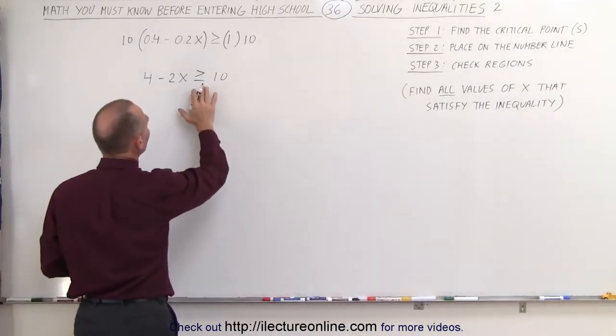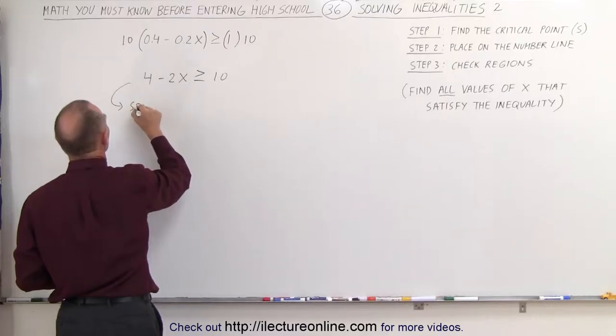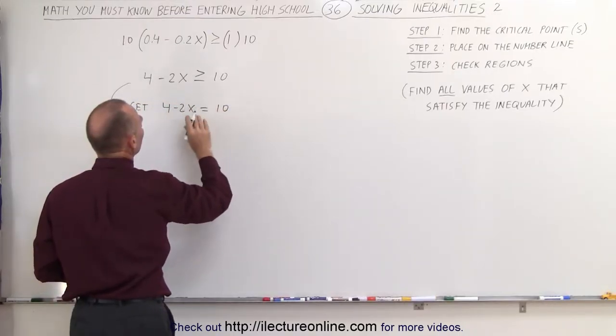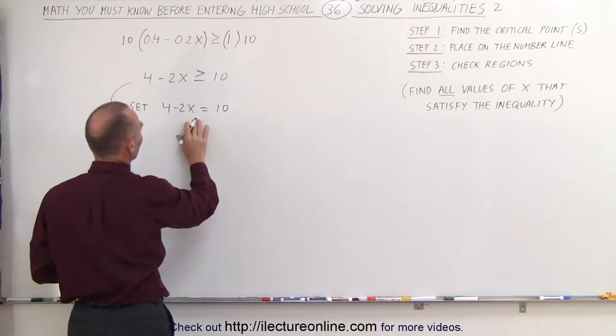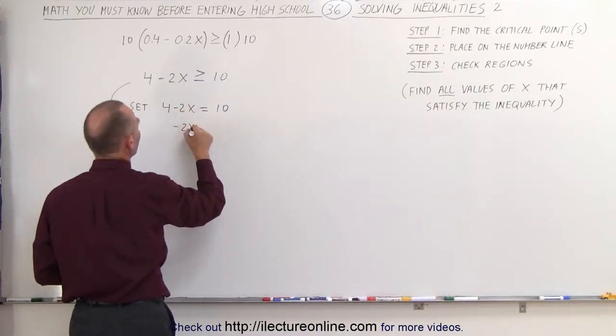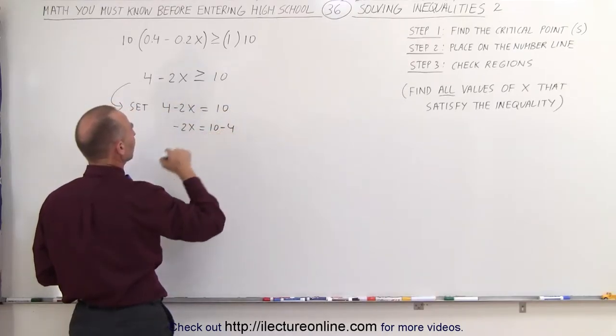What we do is take this and turn that into an equal sign, so we're going to set 4 - 2x = 10 and solve for x. The next step is to move the 4 to the other side. We have -2x = 10 - 4, because when you cross the equal sign, the sign changes.